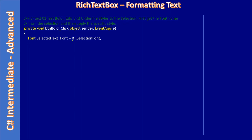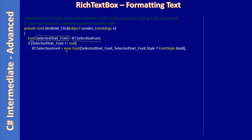The SelectionFont gives the font for the selected text only, not all the text. The sample code shown here is for bold. First we invoke rt.SelectionFont, store that in a font reference called selectionFont. When it is not null, we construct a new font — this is the click event routine for the bold button.